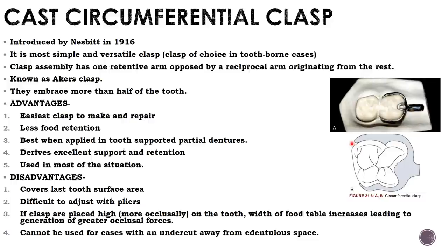Advantages of cast circumferential clasp: easiest clasp to make and repair, less food retention, best for tooth-supported partial dentures, derives excellent support and retention, and used in most situations. Disadvantages: covers more tooth surface area, difficult to adjust with normal pliers, if placed high it increases occlusal table width generating greater occlusal forces, and cannot be used when the undercut is away from the edentulous space.